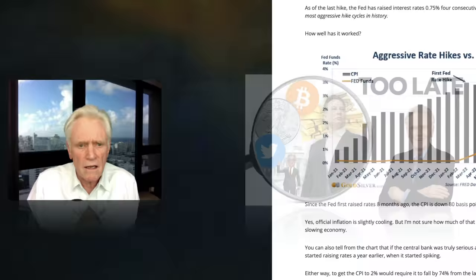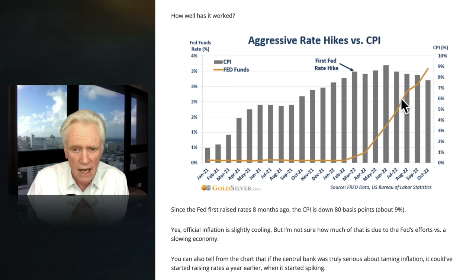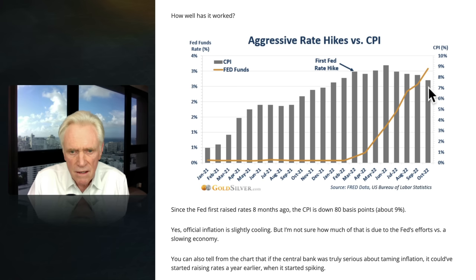Here we have aggressive rate hikes versus the CPI. On this side we've got a 10% scale for the CPI — the gray bars — and a 4% range of scale. So zero to 4% on this side, zero to 10 on this side. Now, if they were both on the same scale, this line of the Fed funds rate would be way down here at 3.2 or 3.1 — right about here if it was on the same scale as the CPI.